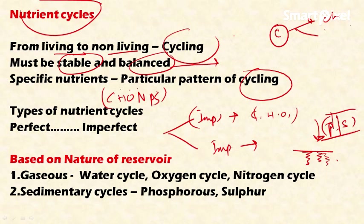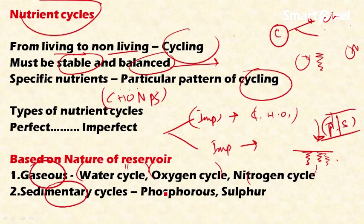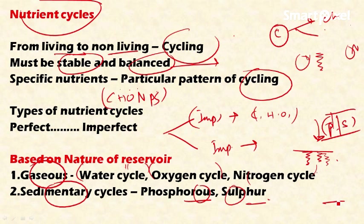On the basis of the nature of the reservoir, we can classify nutrient cycles into gaseous cycles and sedimentary cycles. In gaseous cycles — such as the water, oxygen, and nitrogen cycles — the primary source of these elements is the atmosphere. In sedimentary cycles, the primary source of elements like phosphorus and sulfur is sedimentary deposits on the earth's crust and oceans, not the atmosphere.